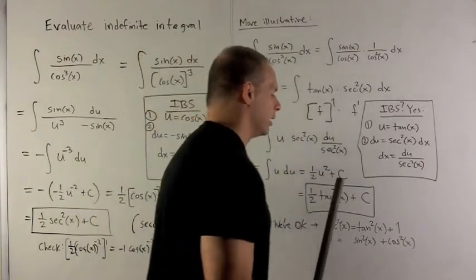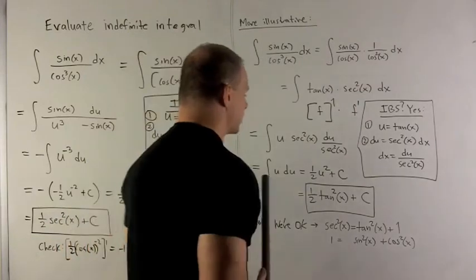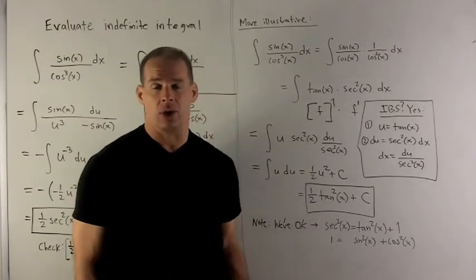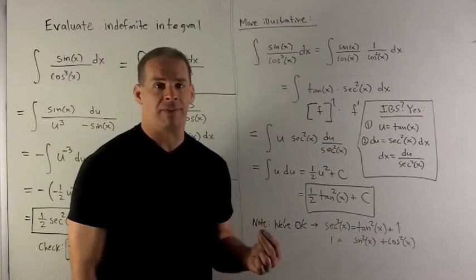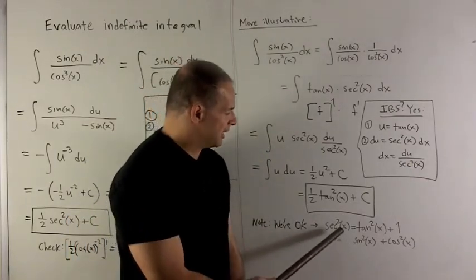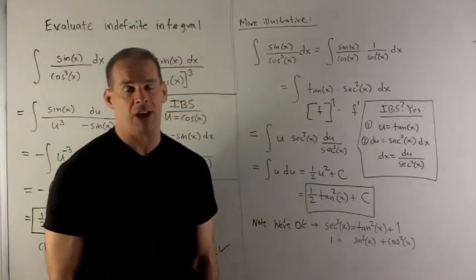Now you might be worried because here we have one half secant squared x, here I have one half tangent squared x. They don't look the same, but actually we're fine because they differ by a constant. Just remember, secant squared equals tangent squared x plus one.